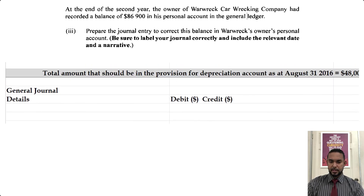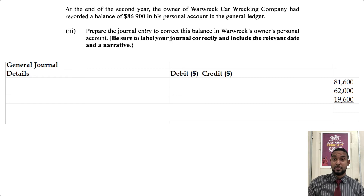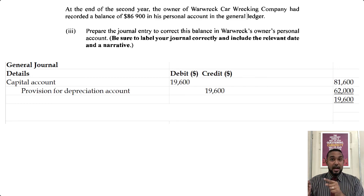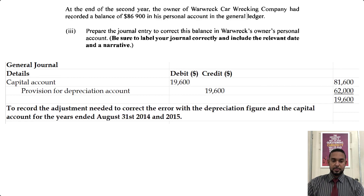So we now have to bring it back down to reflect the correct depreciation charges. The correct depreciation was $81,600. The incorrect depreciation actually charged was $62,000, so the difference is $19,600. That $19,600 has to be debited to capital because the profit was overstated — too much was sent to capital. To reduce capital, you debit the capital account. The credit goes to the provision for depreciation account, because that account was understated — we didn't put enough into it, so we now have to increase it. The provision for depreciation is a contra asset, so to increase it, we credit it. The narration reads: to record the adjustment needed to correct the error with the depreciation figure and the capital account for the years ended August 31st, 2014 and 2015.